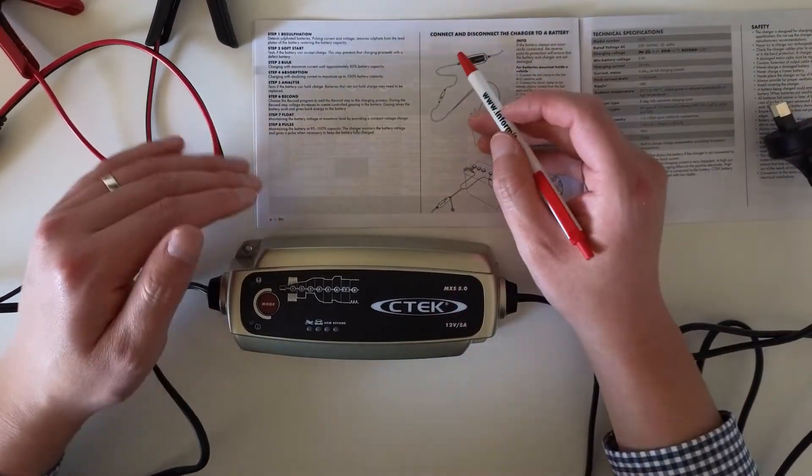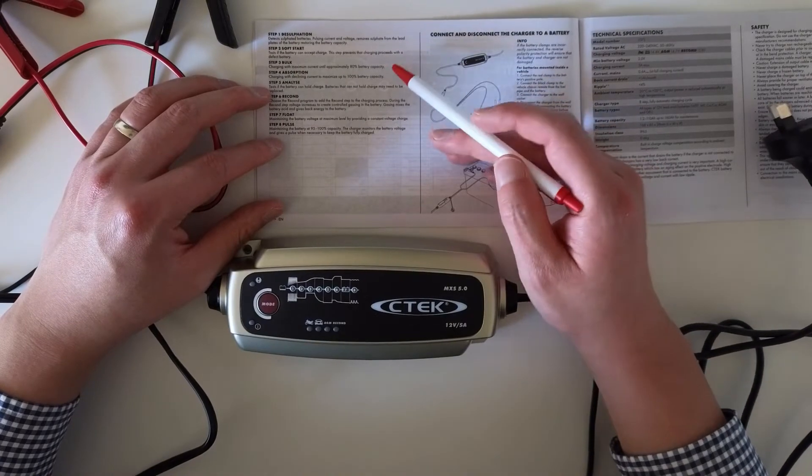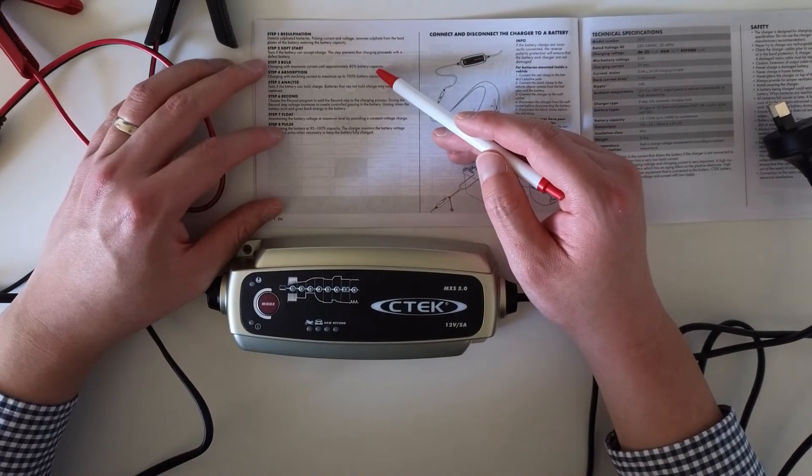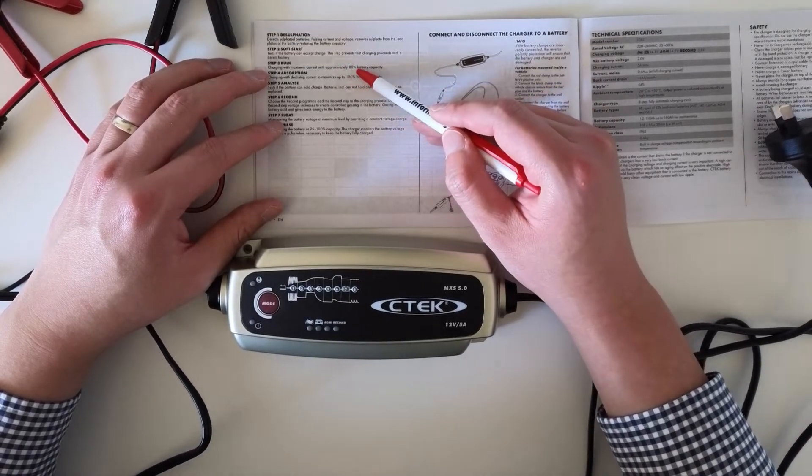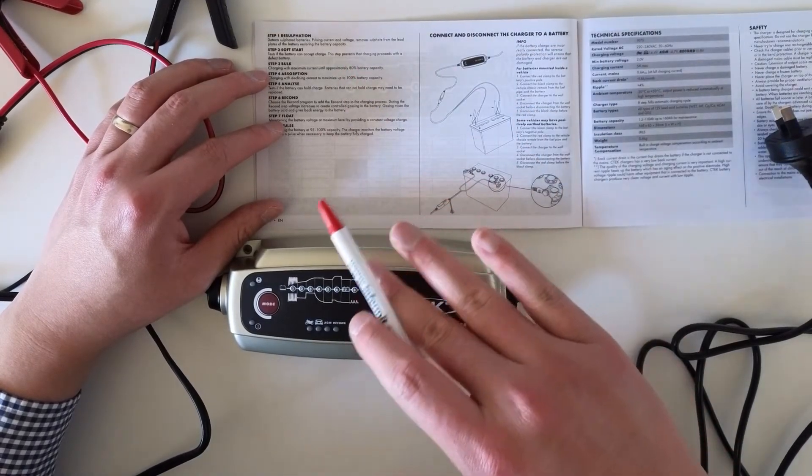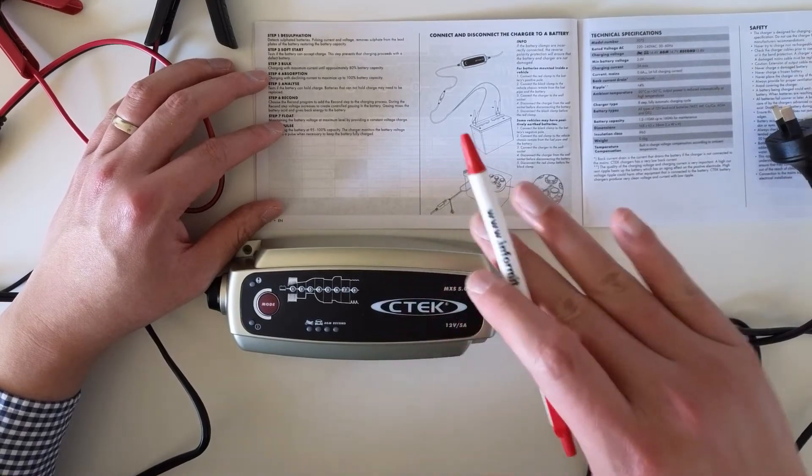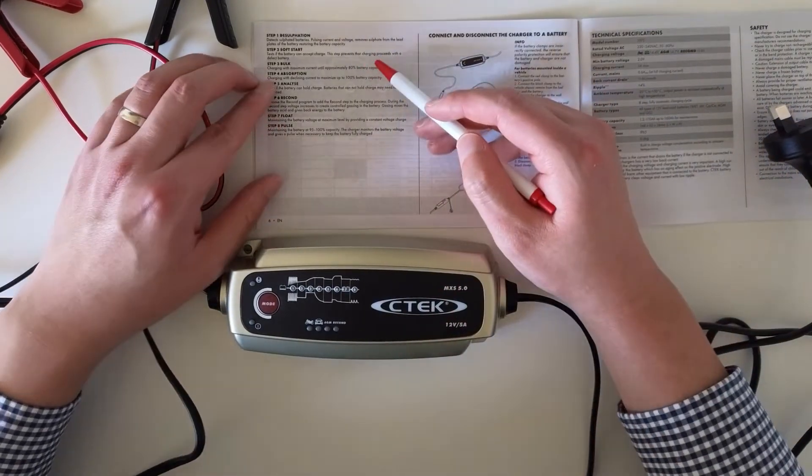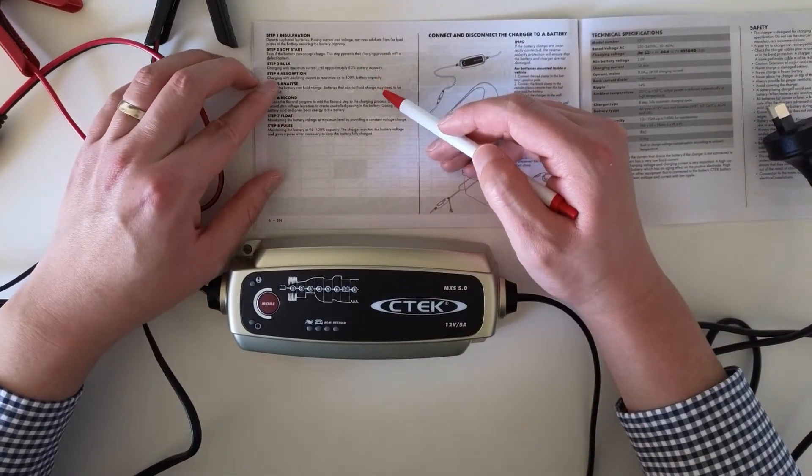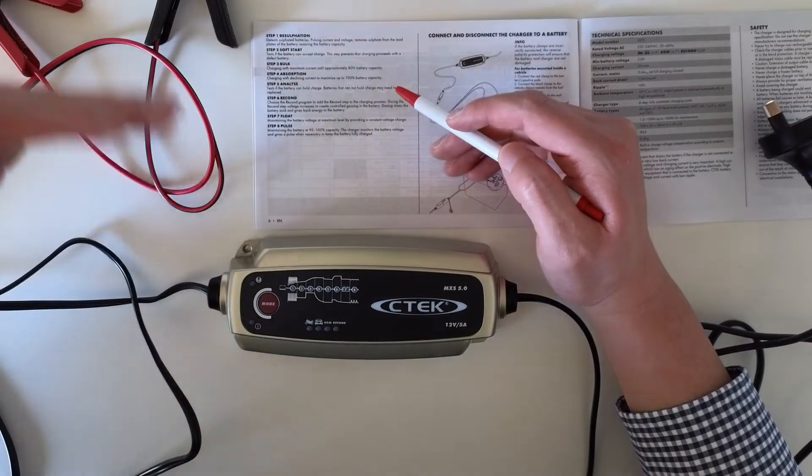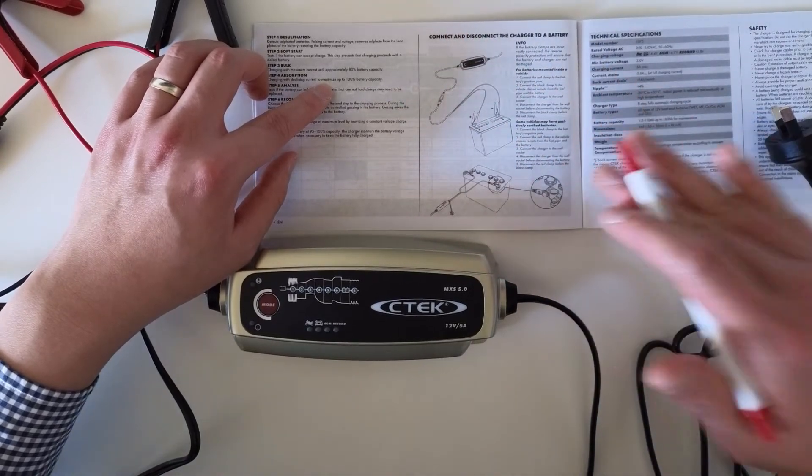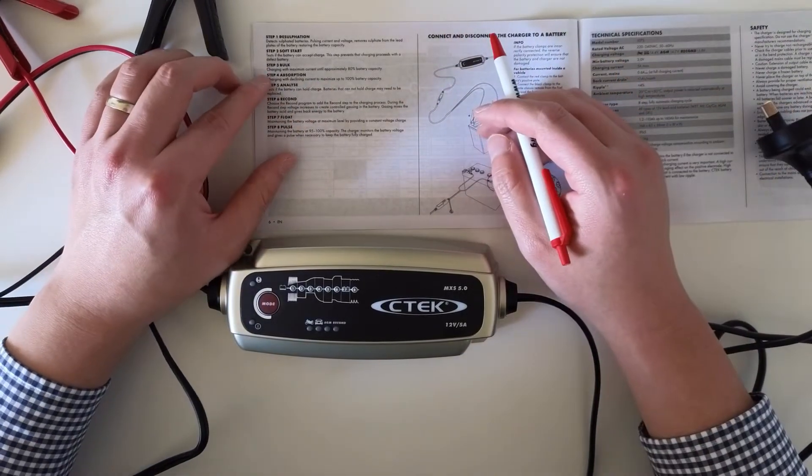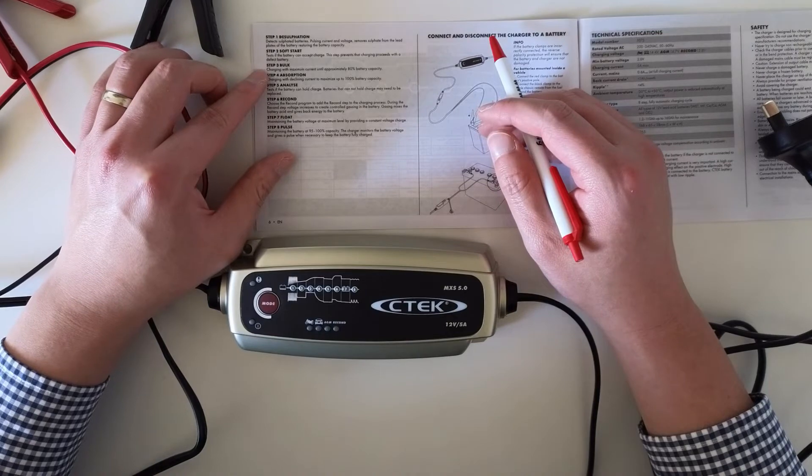Then step four, once the battery reaches 80 percent, then it might be very hard to charge the battery fully. What it does is it tries to charge the battery by declining the current to maximize the level of charge to 100 percent.